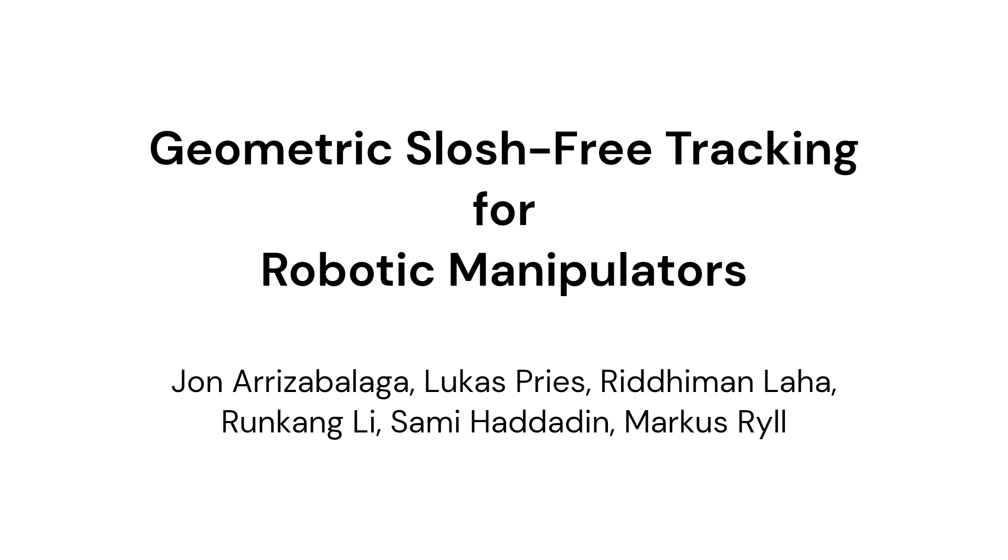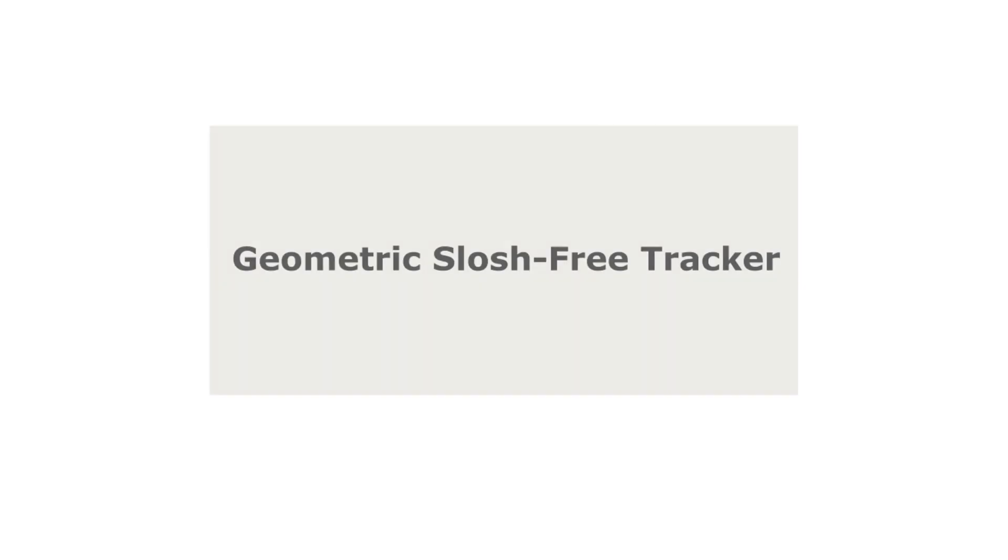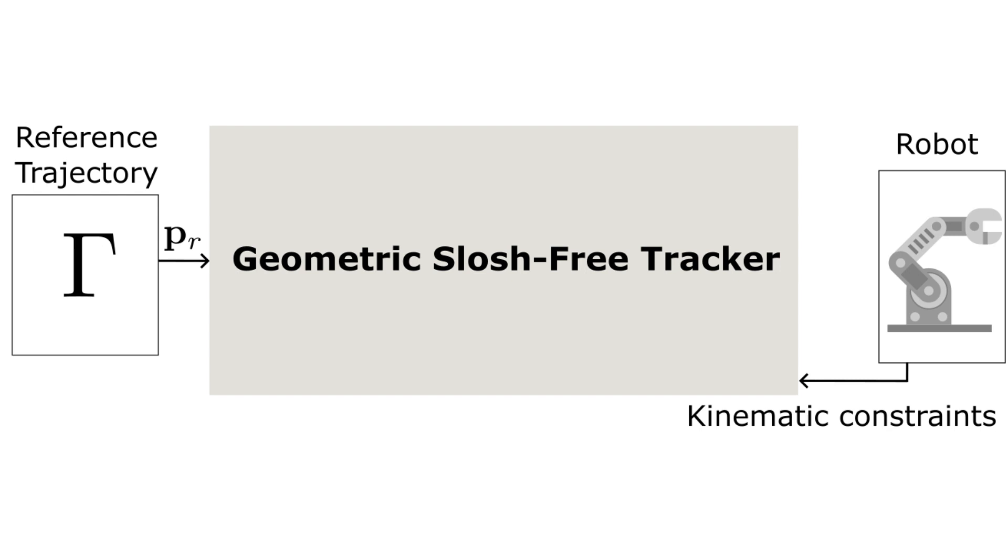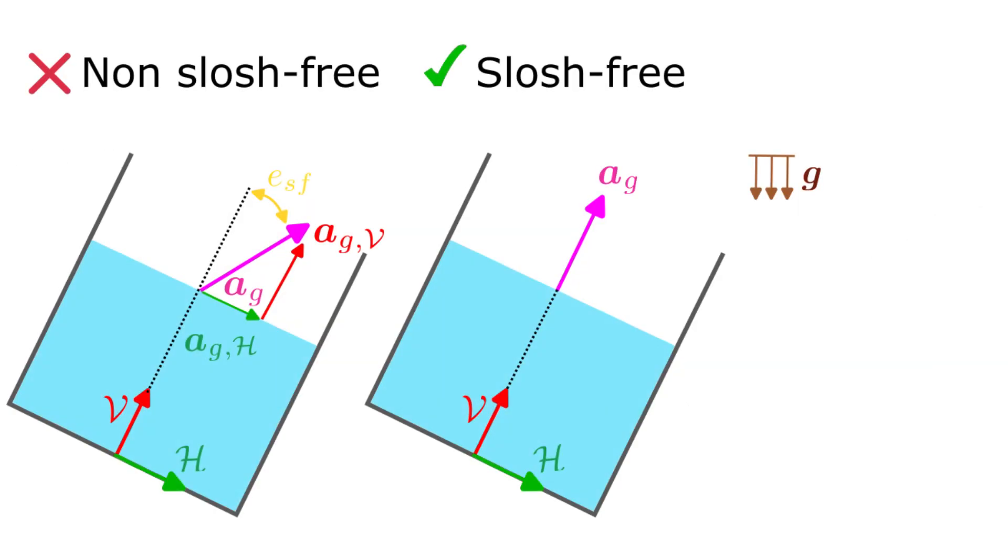This work focuses on the agile transportation of liquids with robotic manipulators. We present a real-time slosh-free tracking technique that solely requires the reference trajectory and the robot's kinematic constraints to output slosh-free and kinematically feasible joint space commands.